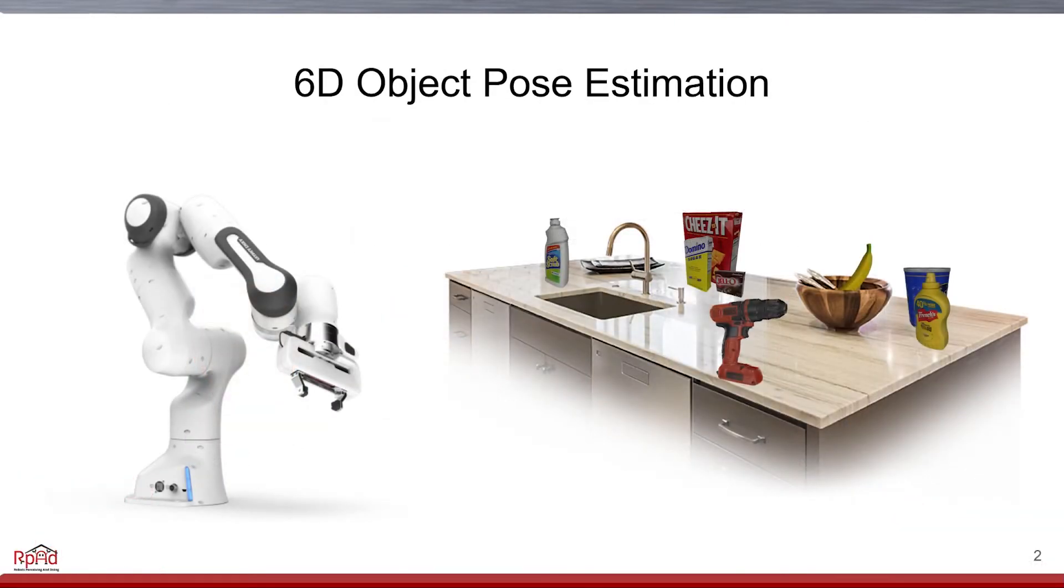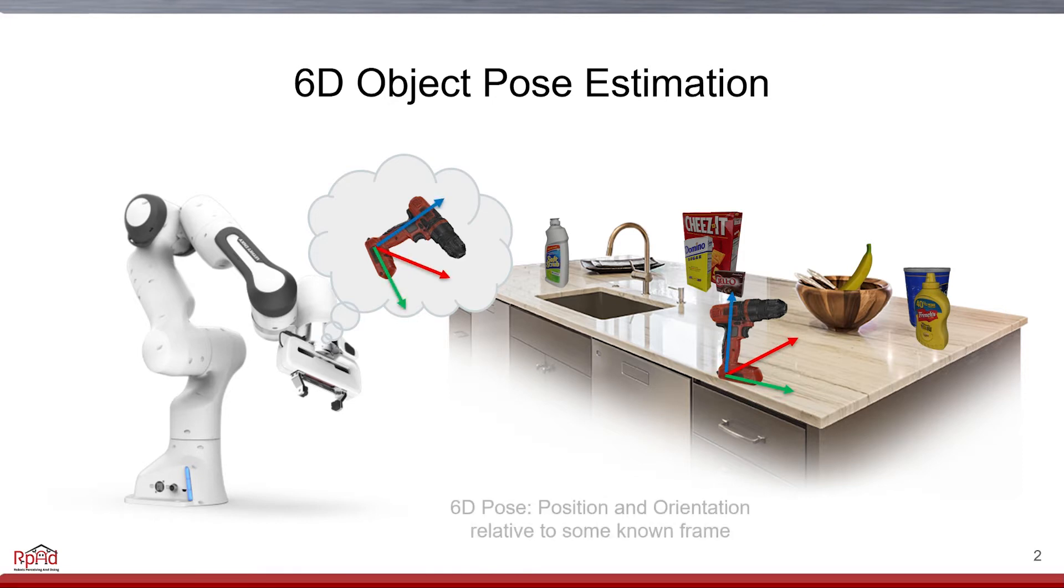Pose estimation is critical for many robot manipulation tasks, where robots must interact with objects in the scene. See this drill. In order to interact, we first estimate the position and rotation of the drill relative to the robot sensor frame, otherwise known as the 6D Pose.